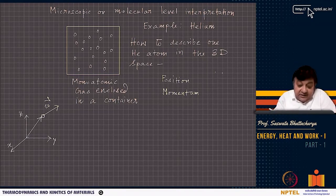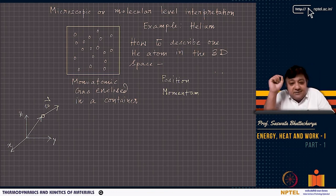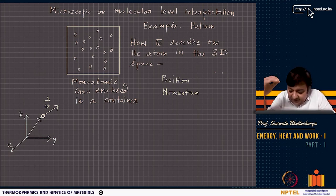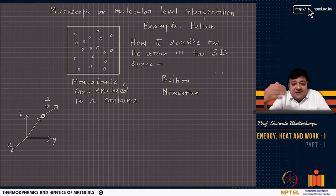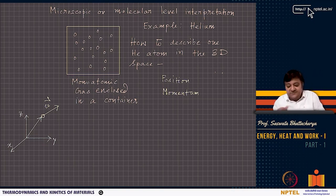We have discussed the molecular interpretation of internal energy. It is possible to use some average energy from statistical mechanics — the statistical theory of matter — where we describe matter in terms of particles, to find U in terms of that average energy.